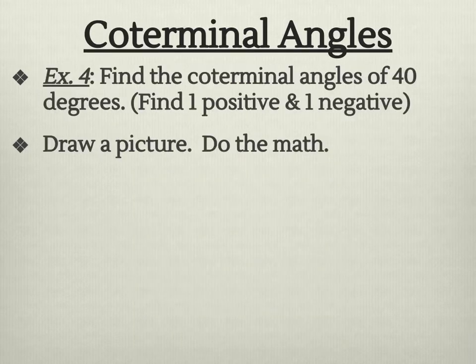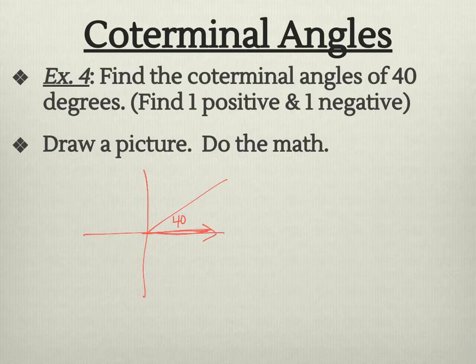Let's find the coterminal angles of a 40 degrees. I'd like you to find one positive and one negative. A hint is just draw the sketch. So you're going to draw your coordinate plane. We're going to label the 40. And then from my x-axis, I'm going to see if I can find another positive angle that comes around to that.